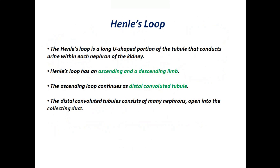Now Henle's loop. The Henle's loop is a long U-shaped portion of the tubule that conducts urine within each nephron of the kidney. Henle's loop has an ascending and a descending limb. The ascending loop continues as the distal convoluted tubule. The distal convoluted tubules of many nephrons open into the collecting duct.